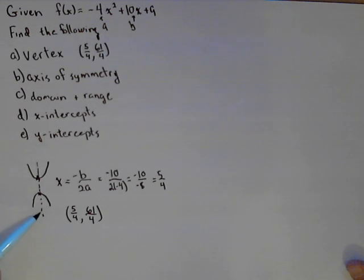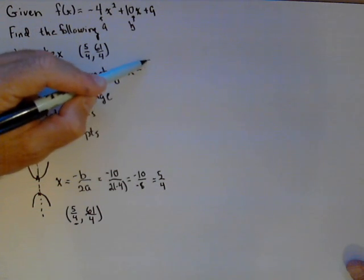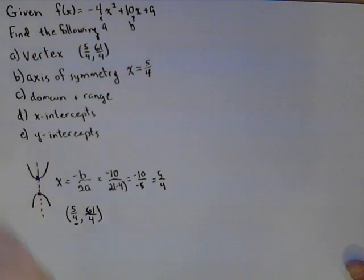So the axis of symmetry is a vertical line, and its equation is just equal to the x-coordinate of our vertex. So it's the equation x equals 5 fourths. So once we've found the vertex, we've already got the axis of symmetry. So not only does this help us find the vertex, it finds the axis of symmetry.